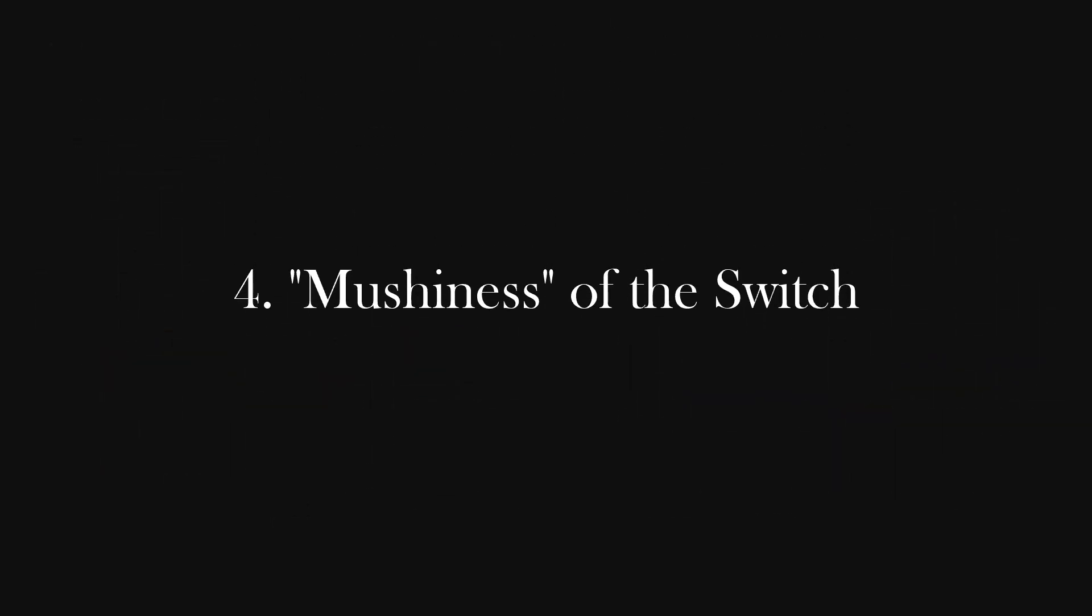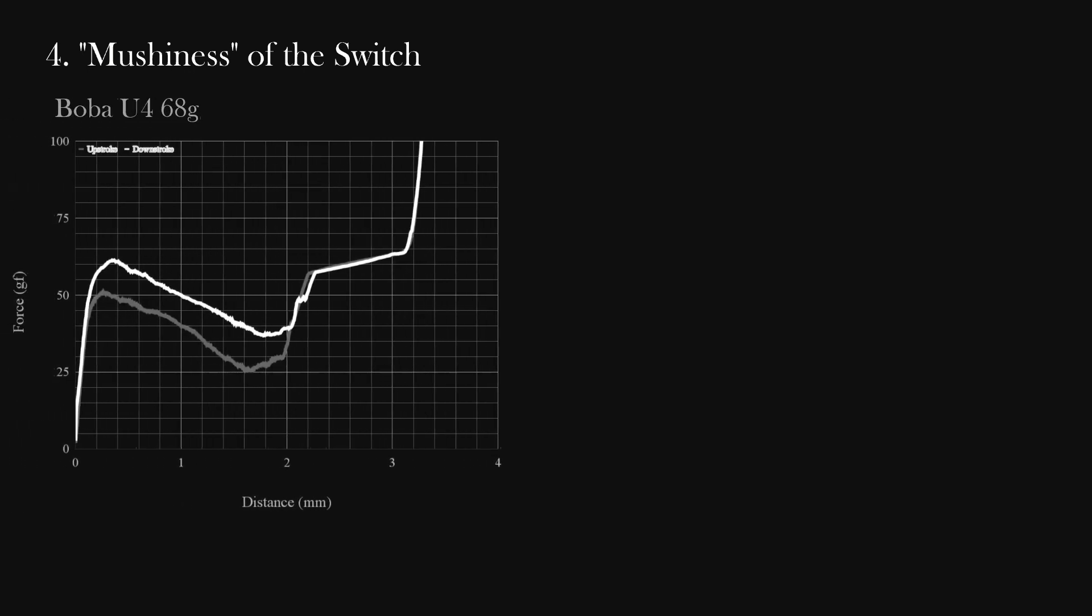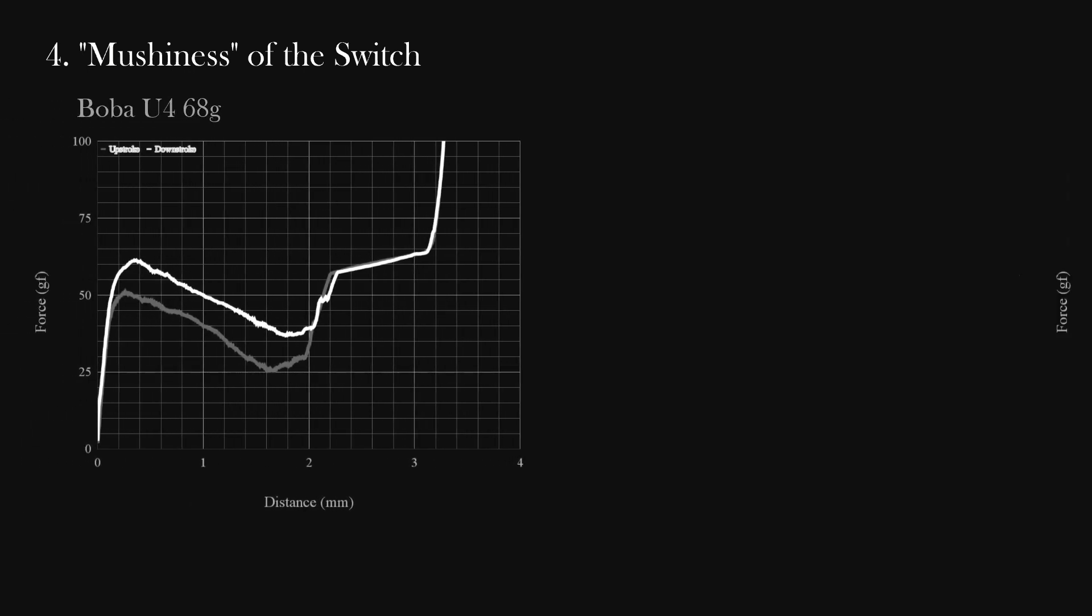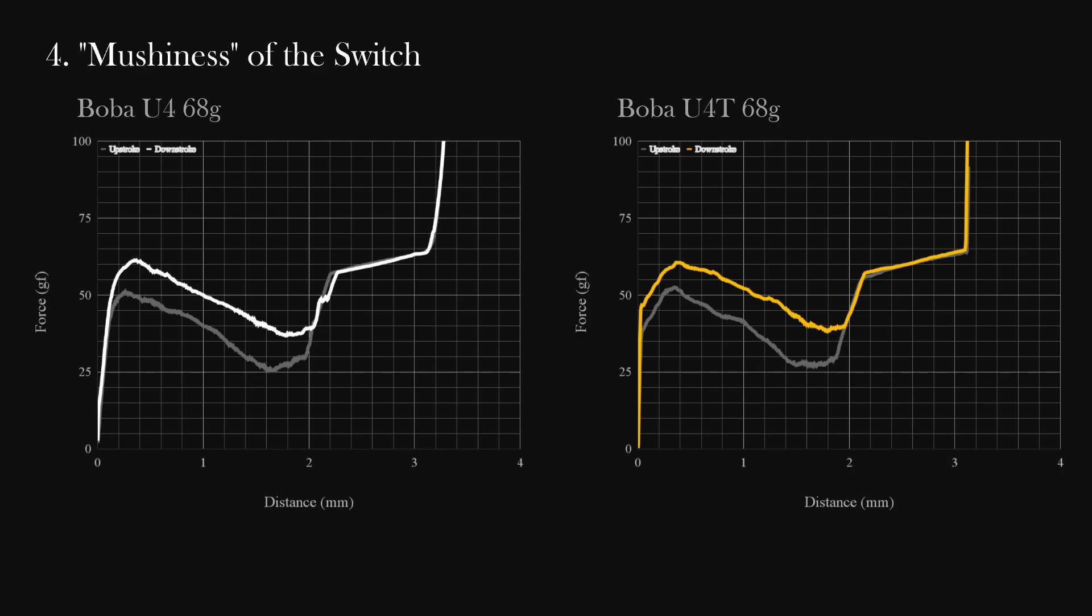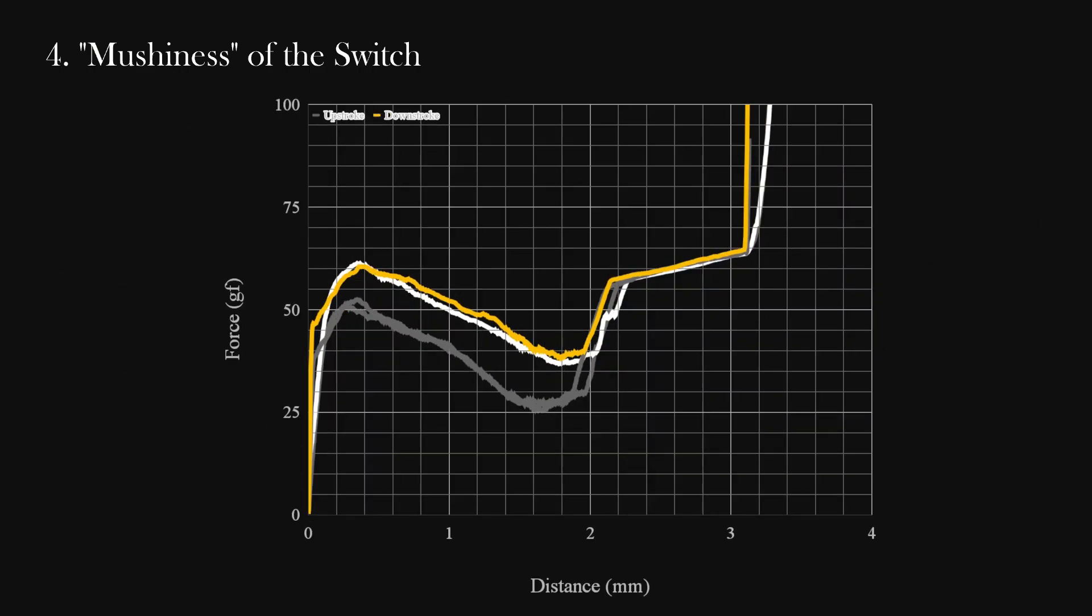Number 4, the mushiness of the bottoming out. This quality is much easier to see in a force curve. Take your average silent switch, say Boba U4s, and compare them with Boba U4Ts, which are basically the identical non-silent counterpart. And you can see how the force curve increases much more aggressively for the U4Ts. The more vertical the end behavior, the less mushy it is.